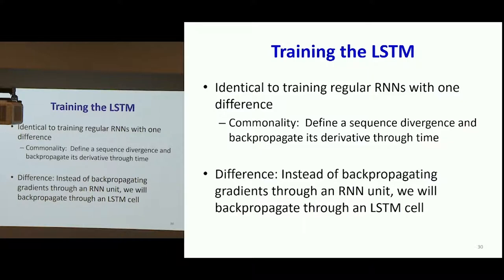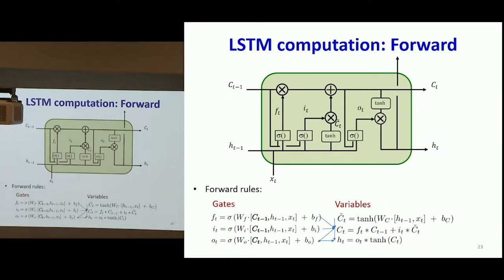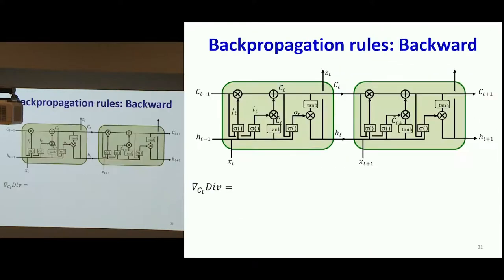Now here's the real challenge: how do you train this thing? When I gave you a simple recurrent cell, there was just one affine combination and then an activation. This thing looks much more complex. If I actually begin to look at the figure and consider the derivative of the divergence with respect to C(t), let's look at all the variables that C(t) influences and all the paths through which the derivatives might come back. There are many paths — this is an extraordinarily large number.